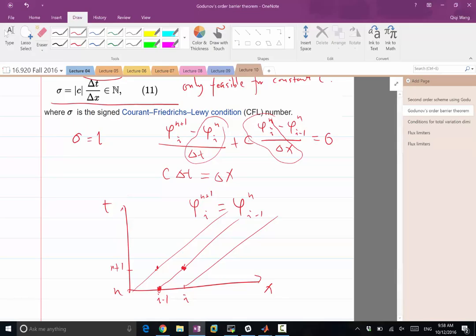But this is artificial because this scheme would only work for linear advection equations. I can only set my delta t and delta x to be at a constant ratio, set my CFL number to be a constant integer, only when C is a constant, right?